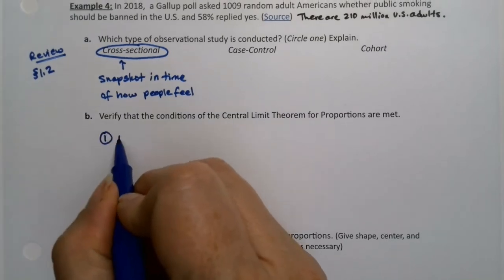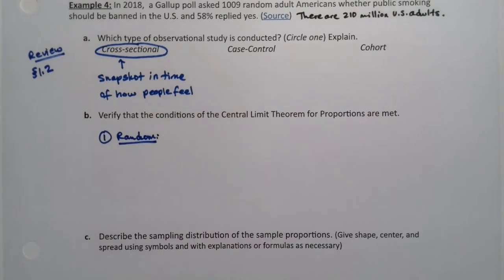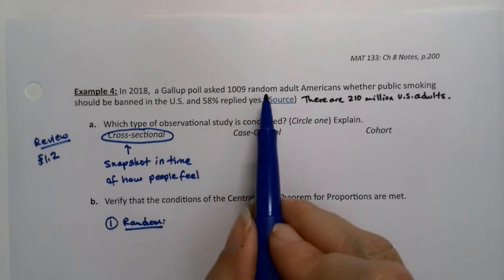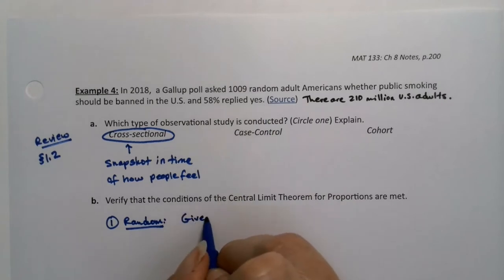Number one, we need random. All right, now for the first time, it wasn't—oh, it is given. I take it back. I was going to say Gallup always does random, so it's kind of safe to assume, but it was actually given to us, given right in the problem. So this is a yes.